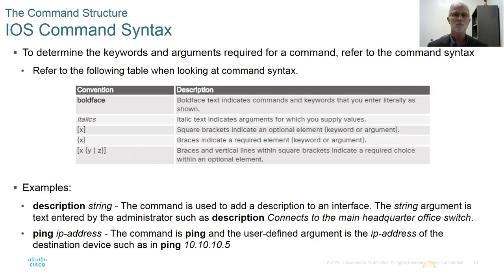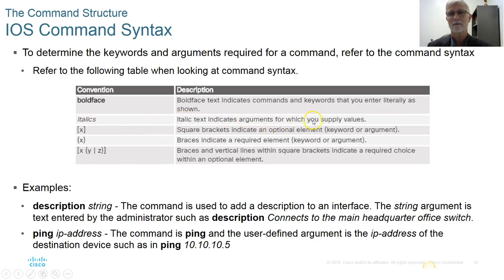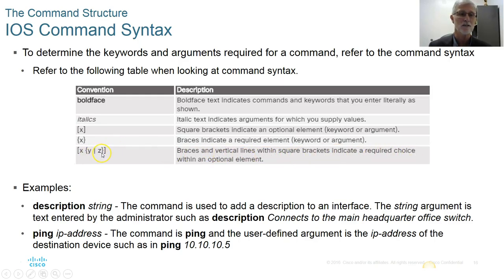When looking at documentation and help notes: bold text means it must be entered exactly as shown; italics indicate the arguments you're allowed to use; square brackets mean the element is optional; braces indicate a required element; and braces with vertical lines indicate a choice — for example, a choice between Y or Z.